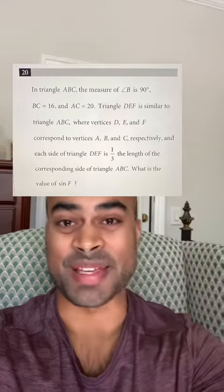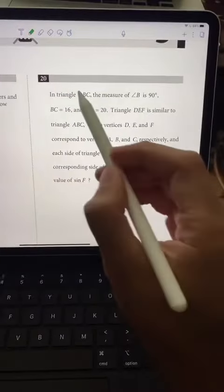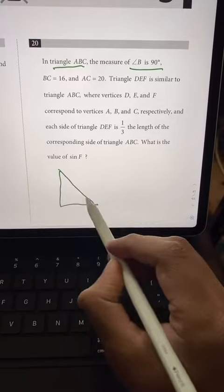This is the hardest question on this SAT math practice test, but we got this. In triangle ABC, the measure of angle B is 90 degrees. So let's go ahead and draw that right triangle.